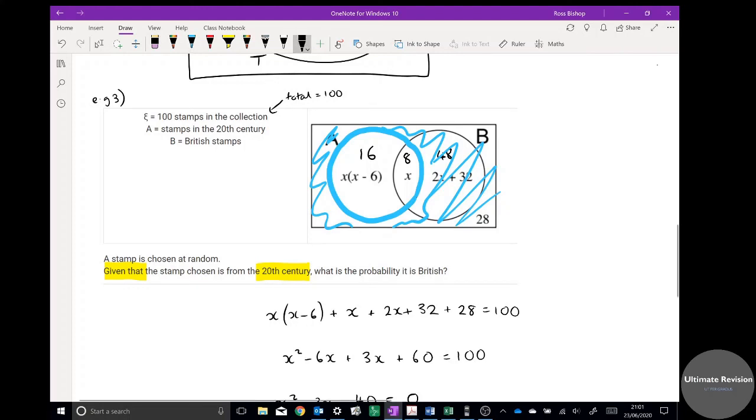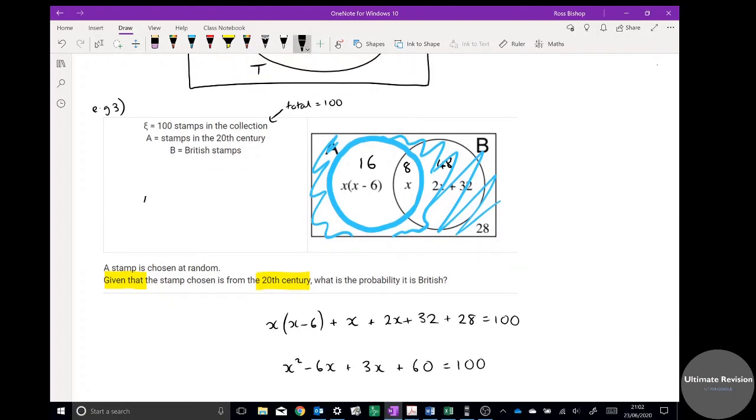What is the probability that it's British? Well, in that bubble, there's only 8 stamps that are British, so my answer, quite simply, 8 over the total, which is 24, and that simplifies down to a third. So that would be the answer to that question there.